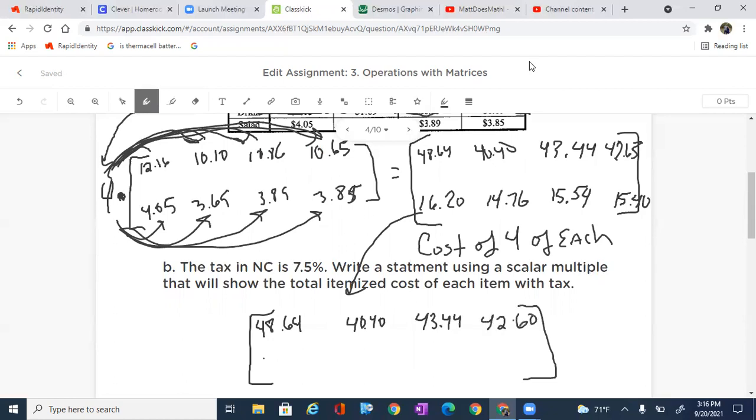We can now add tax to it. Okay. So what do we do if we're going to add tax to this? We are going to use a scalar multiple because tax is going to apply to each and every item. And if we know in North Carolina, it's 7.5% tax.